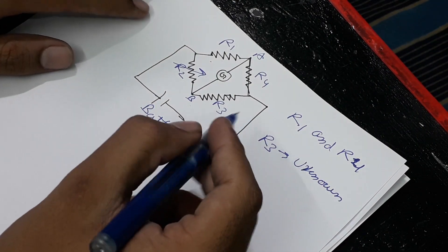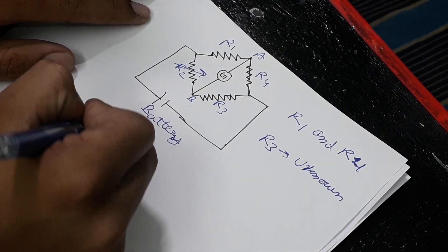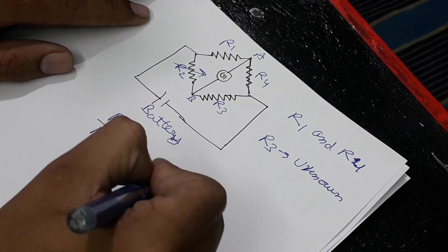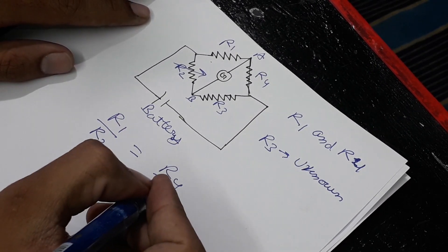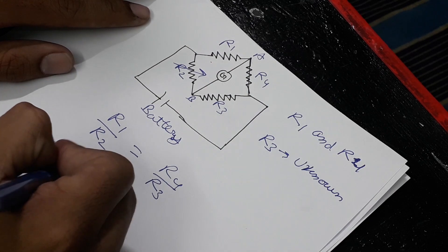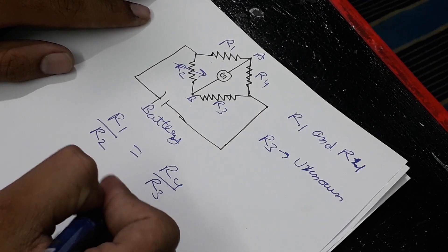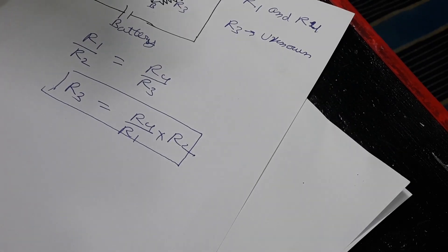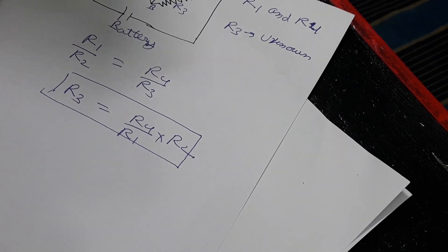So by using the formula R1 upon R2 equals R4 upon R3, we can calculate the unknown resistance which comes out to be R4 upon R1 times R2.